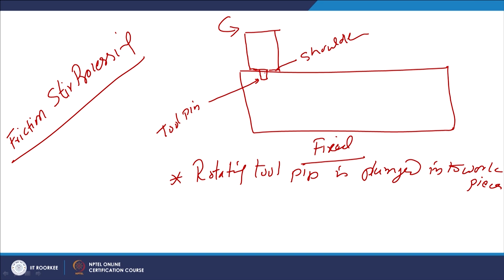Gradually plunging leads to the entry of the pin into the substrate up to the required depth. The pin length corresponds to the depth up to which the surface layers are to be modified. Once the pin penetrates the workpiece completely, the shoulder also comes in contact with the workpiece. The continuous rotation of the shoulder in contact with the substrate, as well as the rotation of the pin which has been plunged into the workpiece, leads to the controlled movement of material from one side to another.